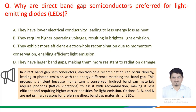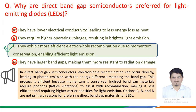This process is efficient because momentum is conserved. Indirect band gap materials require phonons — lattice vibrations — to assist the recombination, making it less efficient and requiring higher carrier densities for light emission. Options A, B, and D are not primary reasons for preferring direct band gap materials for LEDs. The correct answer is Option C: they exhibit more efficient electron-hole recombination due to momentum conservation, enabling efficient light emission.